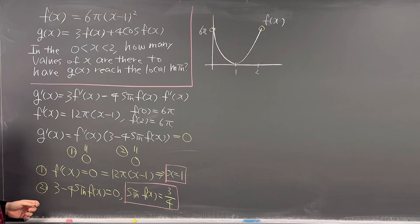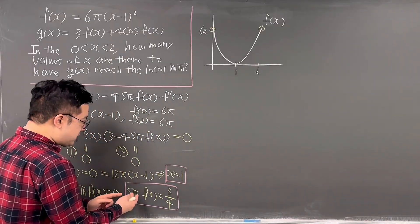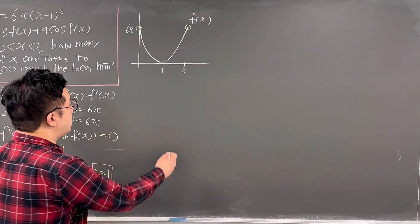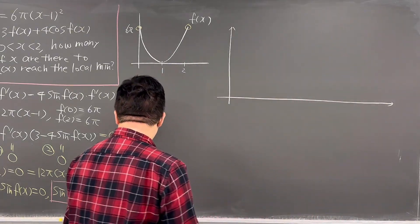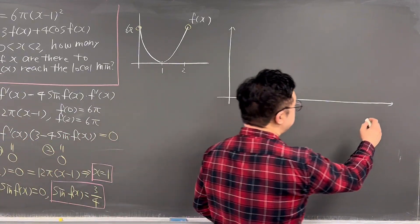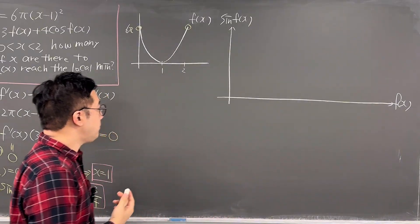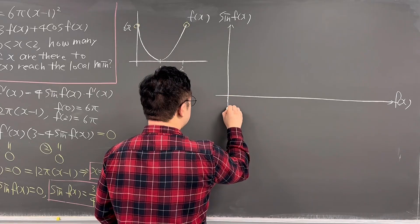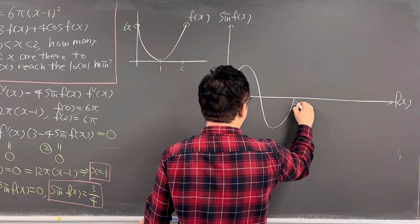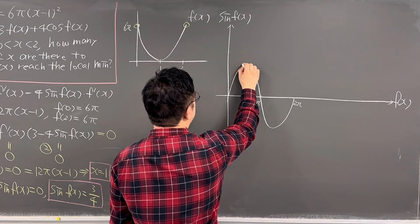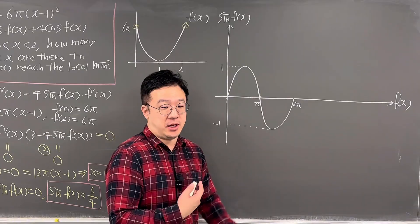Now let's focus on sin(f(x)) = 3/4 by drawing a graph where the horizontal axis is f(x) and the vertical axis is sin(f(x)). The sine function has period 2π, so the graph oscillates between −1 and 1. We need to determine how many full periods fit within the range of f(x).